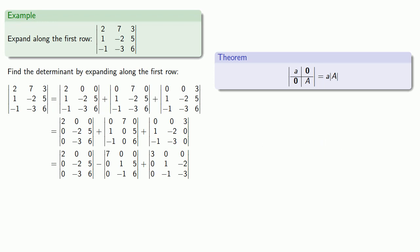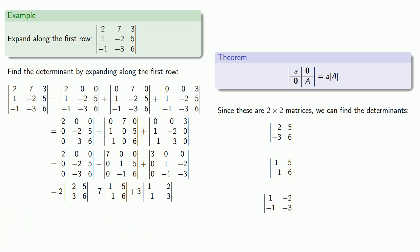So the determinant of this first matrix is going to be two times the minor. The second matrix will subtract seven times the minor. And then we'll add three times the minor. And since these are two by two matrices, we can compute the determinants directly. And get our final answer.